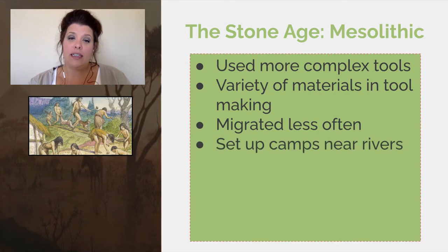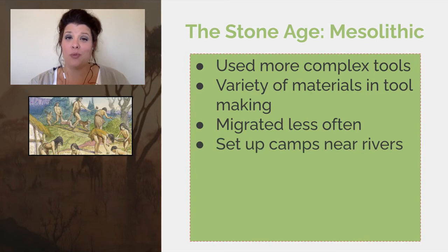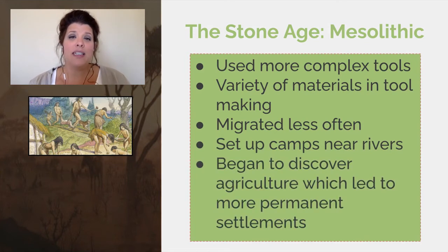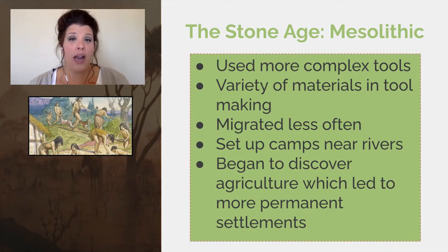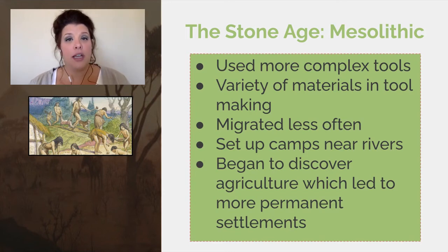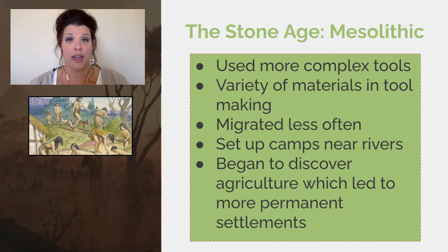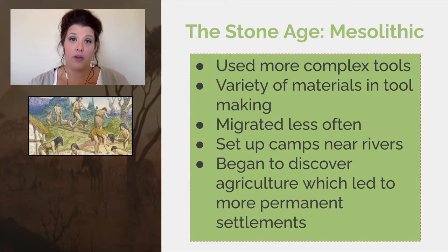People migrated a lot less often because they were starting to set up camps, usually near a river, which is a really smart choice because they started to discover agriculture. They started to think about planting seeds and producing their own food closer to where they lived, so people only migrated with the seasons as opposed to migrating to follow herds.